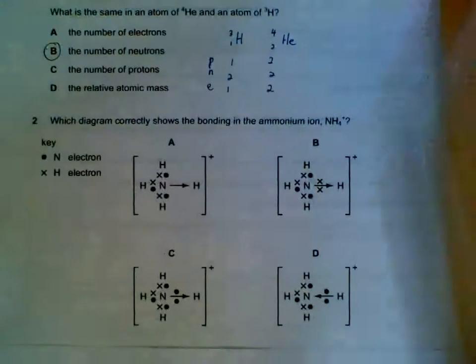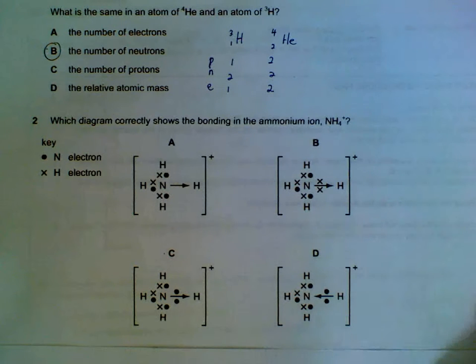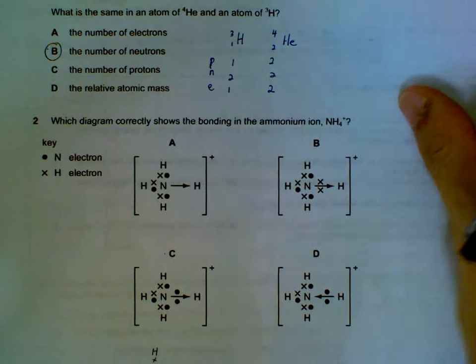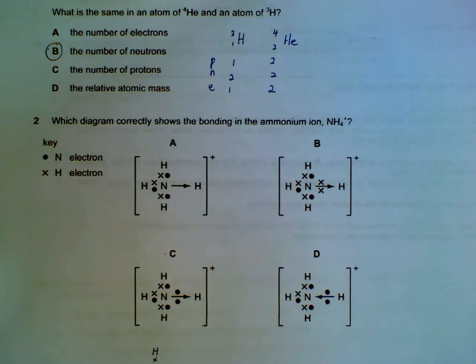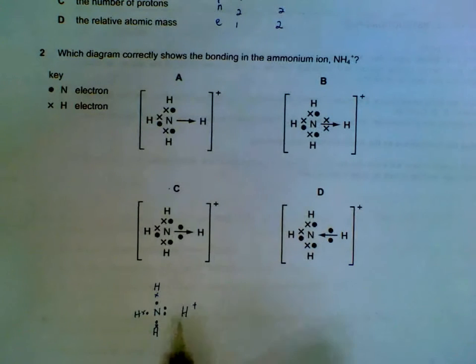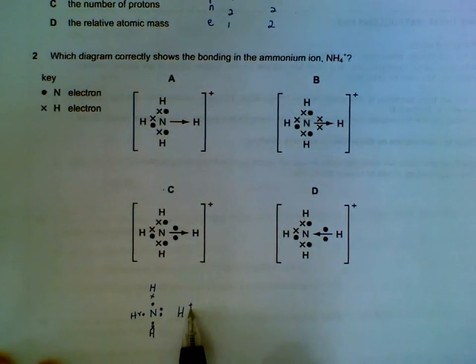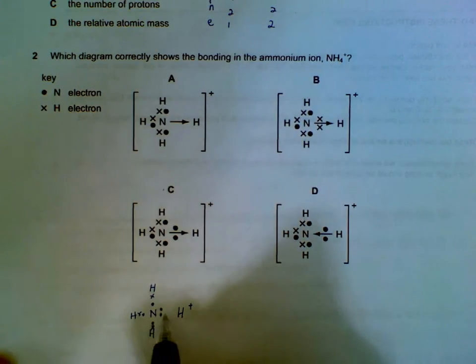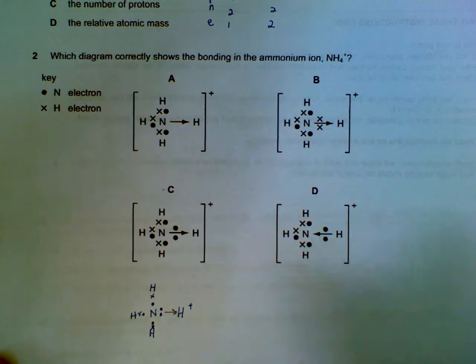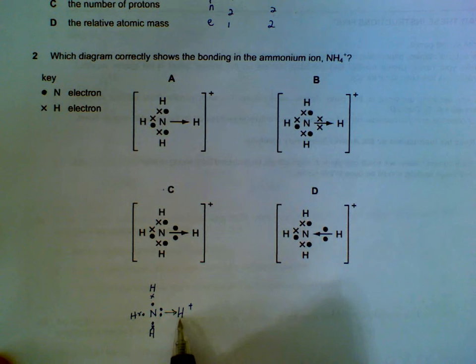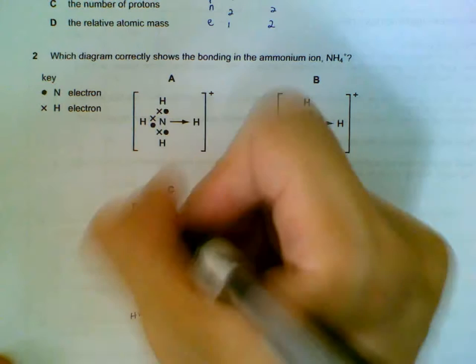Number two, ammonium ion. What is the bonding like? Now, for NH3, ammonia, we know that there's one lone pair on the nitrogen atom. And on the hydrogen ion, there's actually no electrons in a way. So what happens will be, this lone pair will be forming a coordinate bond with the hydrogen ion. So represented by C.